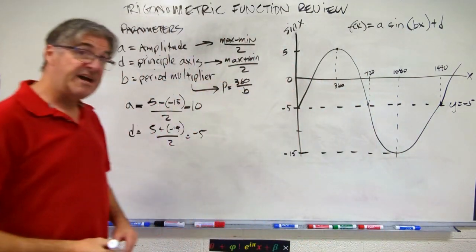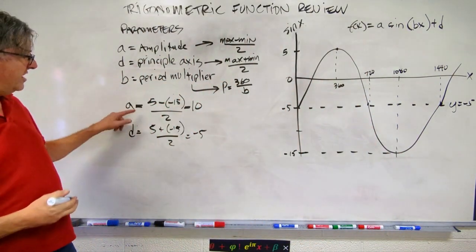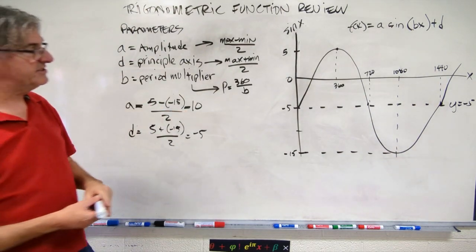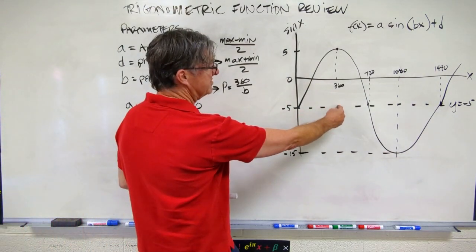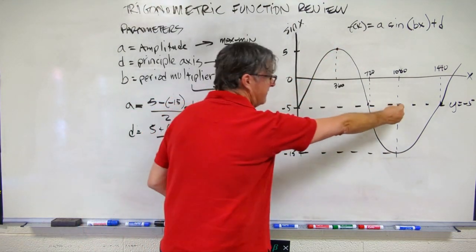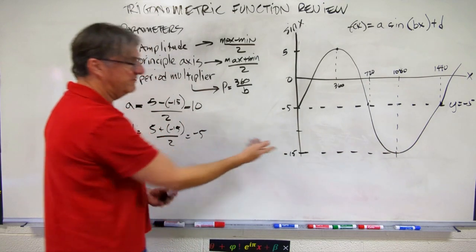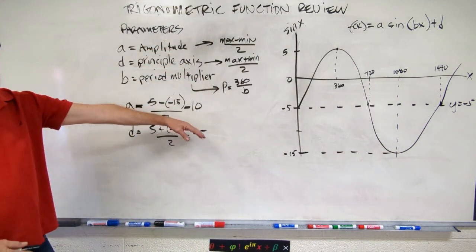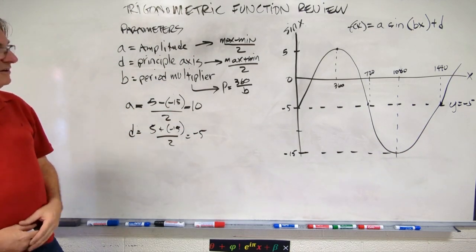So I can write y equals negative 5. That's our principal axis. And now we can check our amplitude. It has to be 10 above or 10 below the principal axis. And that looks pretty good. Here's negative 5. Go up 10 to positive 5. Great. And here's negative 5. Go down 10 to negative 15. So that confirms... so our graph is confirming what we've solved for algebraically.